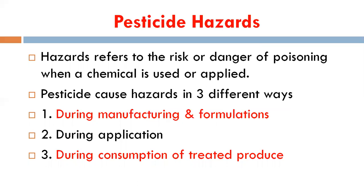Now let's see the pesticide hazards. A hazard is a risk or danger through poisoning when a chemical is used or applied. The pesticide hazard can occur in three different ways: during the manufacturing or preparation of formulation, during application or spraying, or during the consumption of treated produce — causing poisoning in humans, animals, and others.